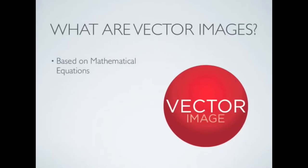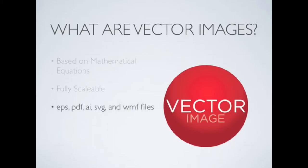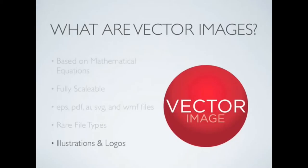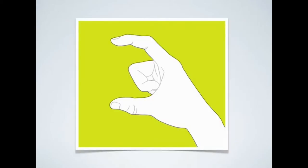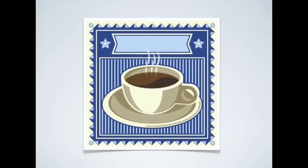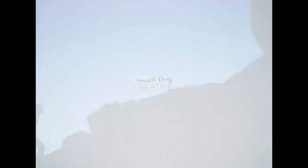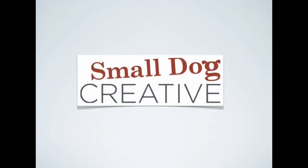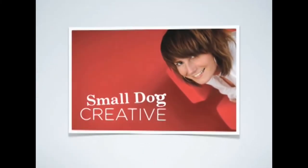A vector image is an image that consists of shapes as opposed to pixels. A vector image can be enlarged, unlike a bitmap, and it doesn't get pixelated. However, the bigger you make it, the more storage space it requires compared to the bitmap format. A vector image generally comes as an AI, PDF, or EXF file.